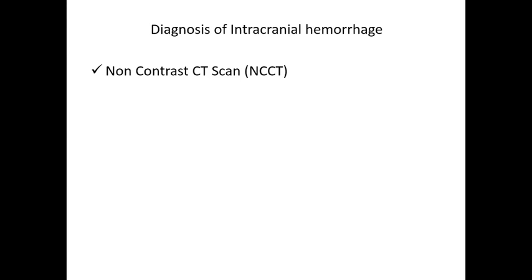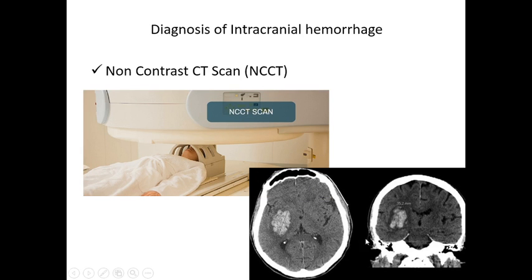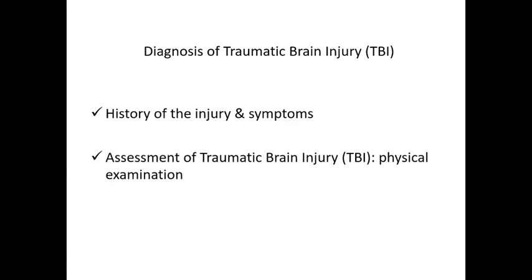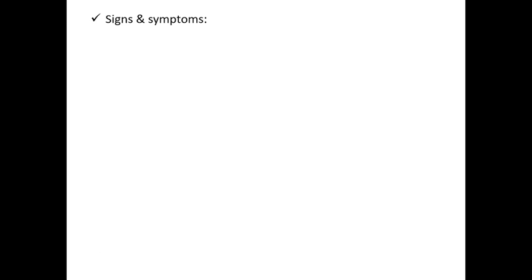The definitive investigation to diagnose intracranial hemorrhage is a non-contrast CT scan (NCCT). This shows bleeding into the brain tissues. Traumatic brain injuries are diagnosed based on history, symptoms, physical examination findings, and investigation results.